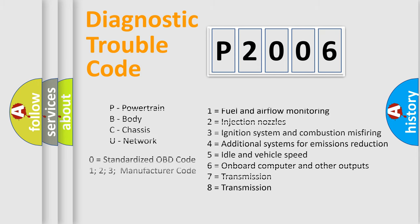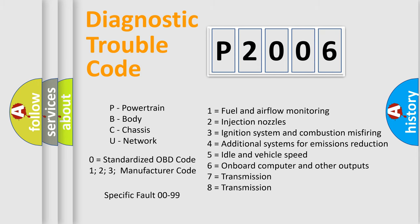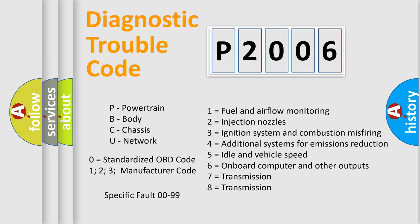Only the last two characters define the specific fault of the group. Let's not forget that such a division is valid only if the second character code is expressed by the number zero.